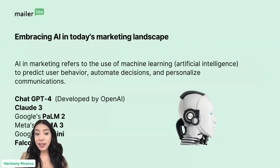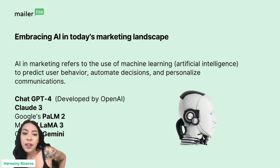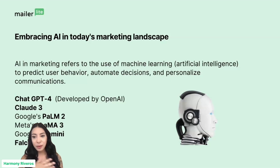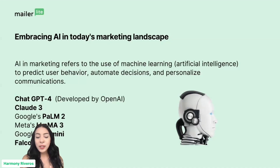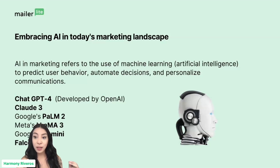Embracing AI in today's marketing landscape. AI and marketing refers to the use of machine learning and artificial intelligence to predict user behavior, automate decisions, and personalize communications. There are many ways AI can be used in marketing, but specifically predicting behavior, automating decisions, and personalizing communications are big ones — things that as email marketers we were doing anyway, but AI helps us do them quicker and more efficiently.